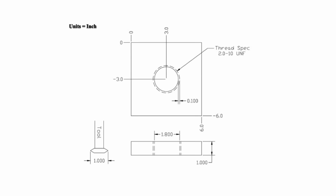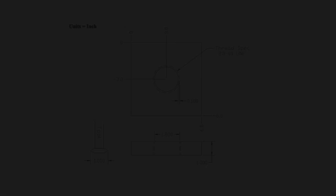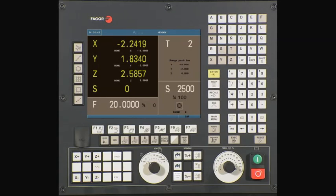In this operation, the CNC will perform a helical cutting path to form the desired threads. Our selected tool for this operation is a 1 inch diameter threading tool.